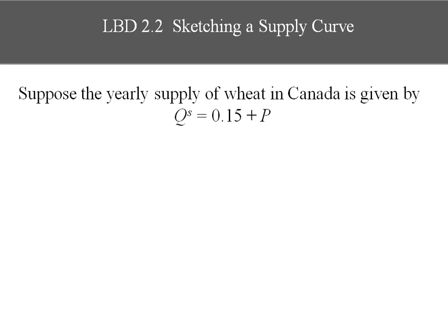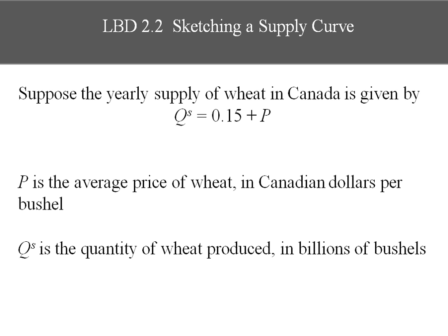Let's sketch a supply curve. Suppose the yearly supply of wheat in Canada is given by quantity supplied equals 0.15 plus P. P is the average price of wheat in Canadian dollars per bushel, and QS is the quantity of wheat produced in billions of bushels.